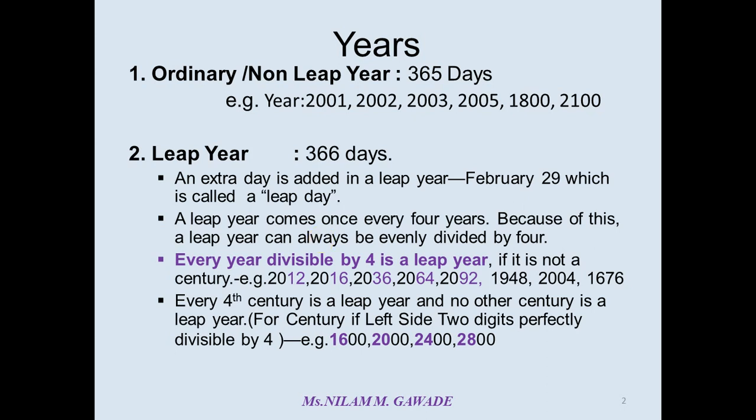Leap year comes once in every four years. To find out whether the given year is leap year or non-leap year, we have to divide last two digits of the year by four. If it is completely divisible, then the year is a leap year. Or for century years, if left two digits are completely divisible by four, then it is a leap year.